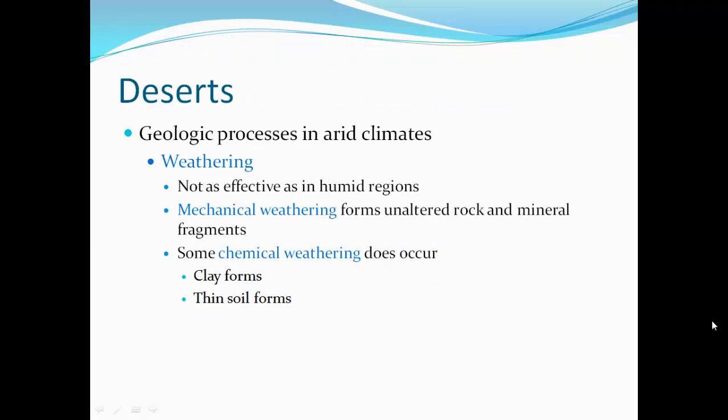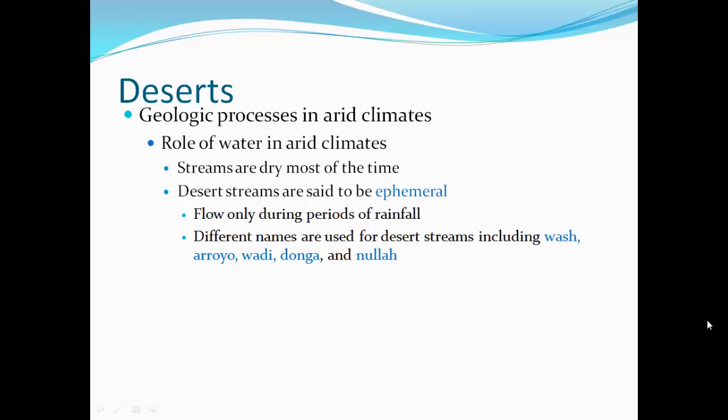Now switching to deserts. Geologic processes in arid climates include weathering, which is not as effective as in humid regions because of the lack of moisture. Mechanical weathering forms unaltered rock and mineral fragments, and chemical weathering can also occur in deserts, including the formation of clay and thin soils. The role of water in arid climates: streams are dry most of the time. Desert streams are called ephemeral — they flow only during periods of rainfall. Different names used for desert streams include Wash, Arroyo, Wadi, Nonga, and Nala.